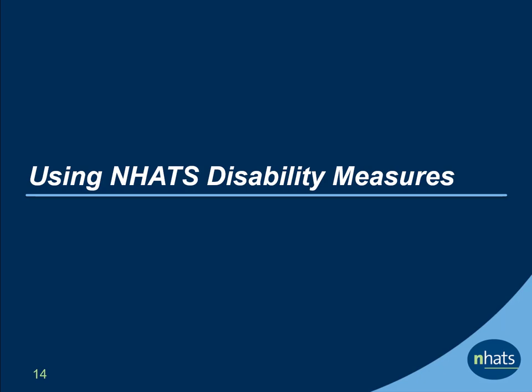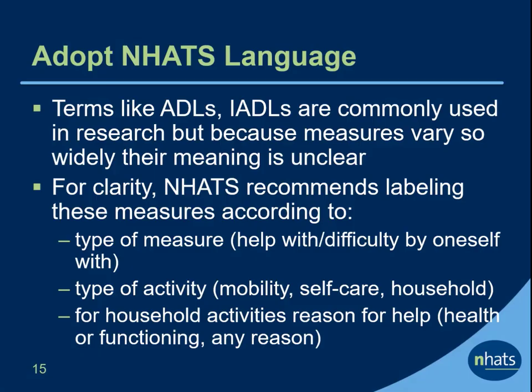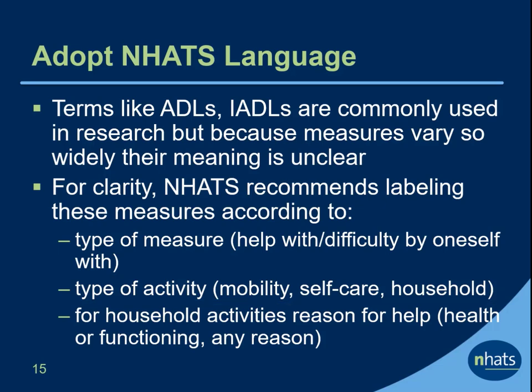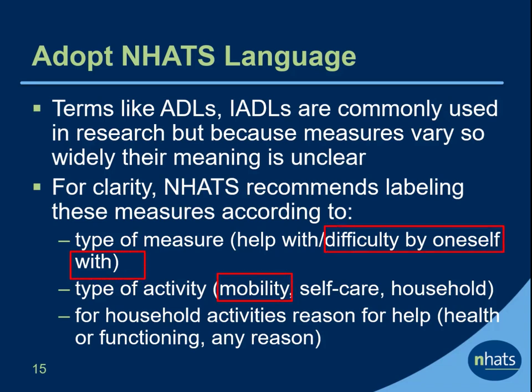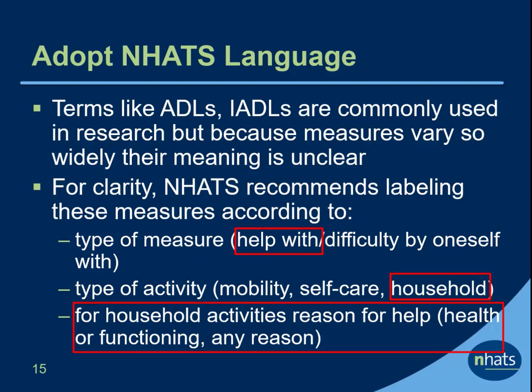Here, we offer users a few tips on how to use the NHATS disability measures. Terms like ADLs and IADLs are commonly used in research, but because measures vary so widely from study to study, their meaning is unclear — the reader cannot tell if the measures assess difficulty and under what circumstances, or help or device use, and what types of activities are included. For clarity, we recommend adopting NHATS language in your research: label measures according to the type of measure, type of activity, and for household activities, the reason for help. For instance, an outcome might be help with mobility or self-care activities, difficulty by oneself or always received help with mobility activities, or help with household activities for health and functioning reasons.